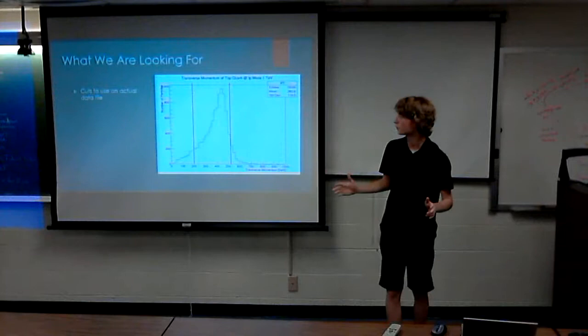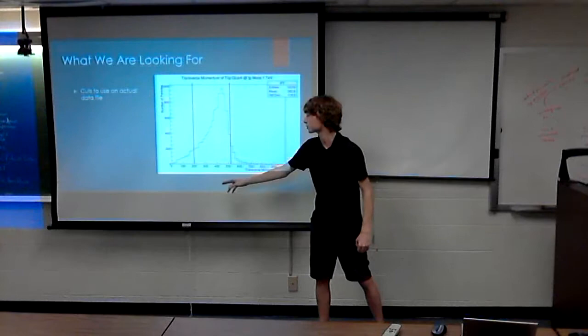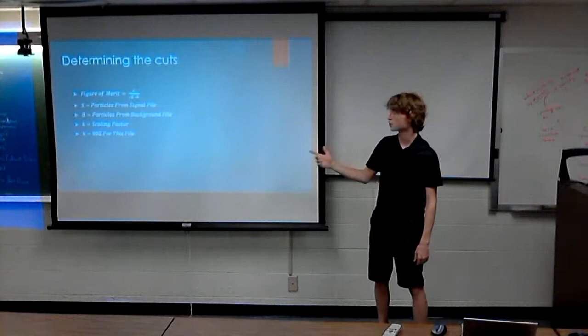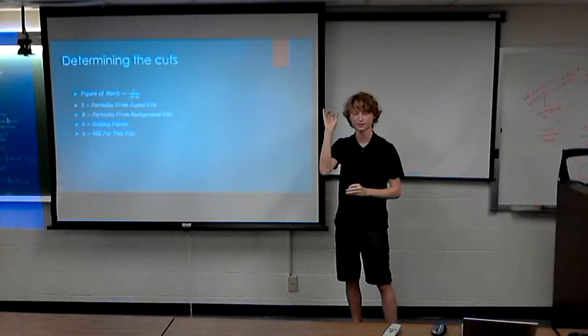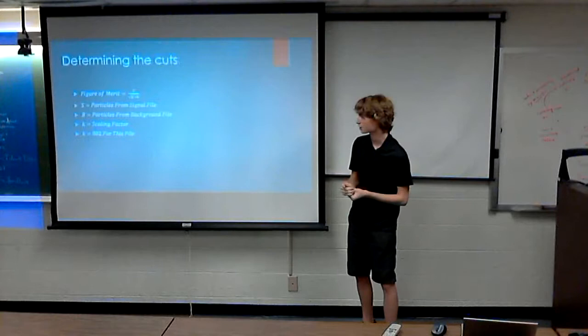So what we're using this data to look for are what are called cuts or limits on the data that would indicate particles that are probably coming from a T quark decay. For instance, let's look at top quarks that are between 200 and 500 GeV. And to determine which cuts are the best, you use this formula, which gets you a figure of merit. The figure of merit is calculated by taking the amount of particles within the cuts from the signal file over the square root of the amount of particles from the background file within the cuts times the scaling factor. The scaling factor comes from the probability of decay and how many particles you have in each file. Dr. Berringer and I determined that for my files, the scaling factor was 802.